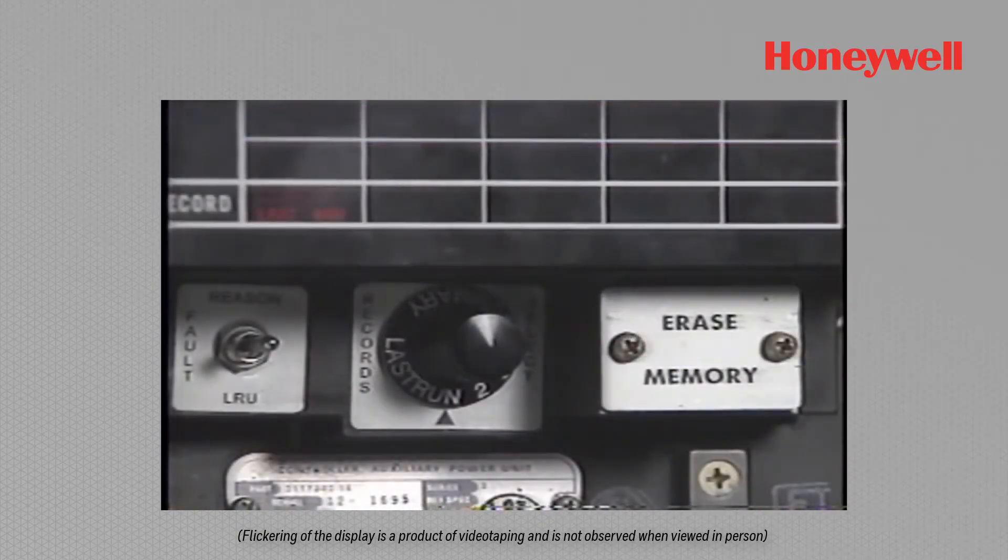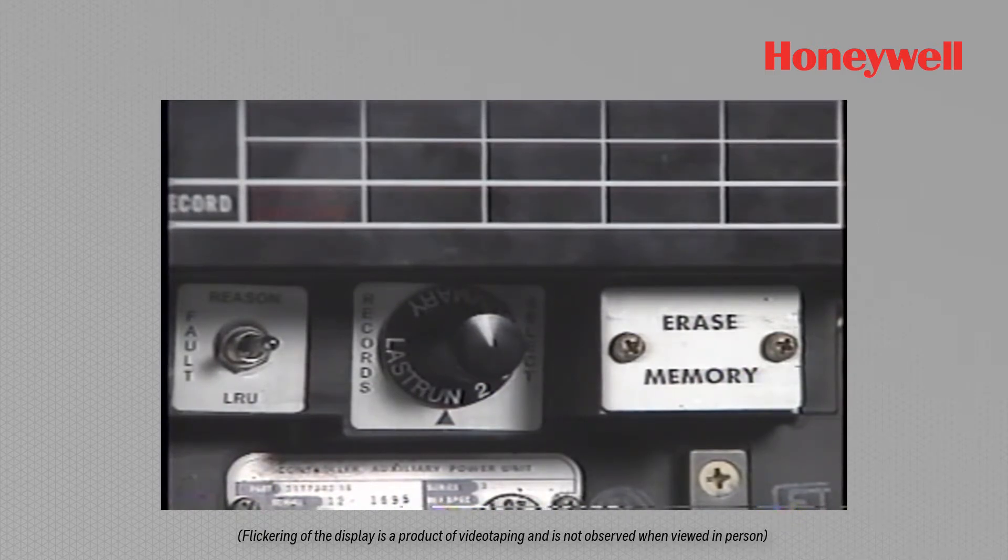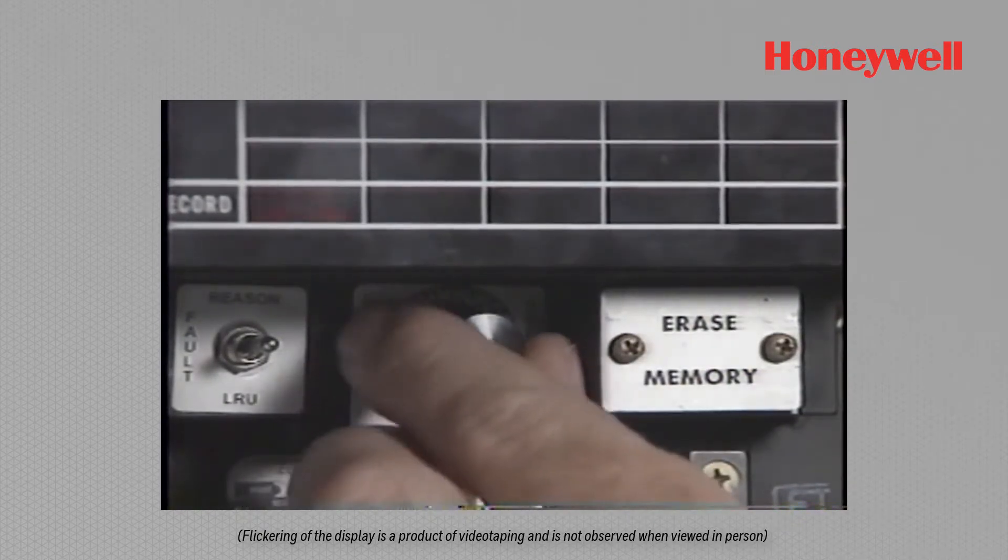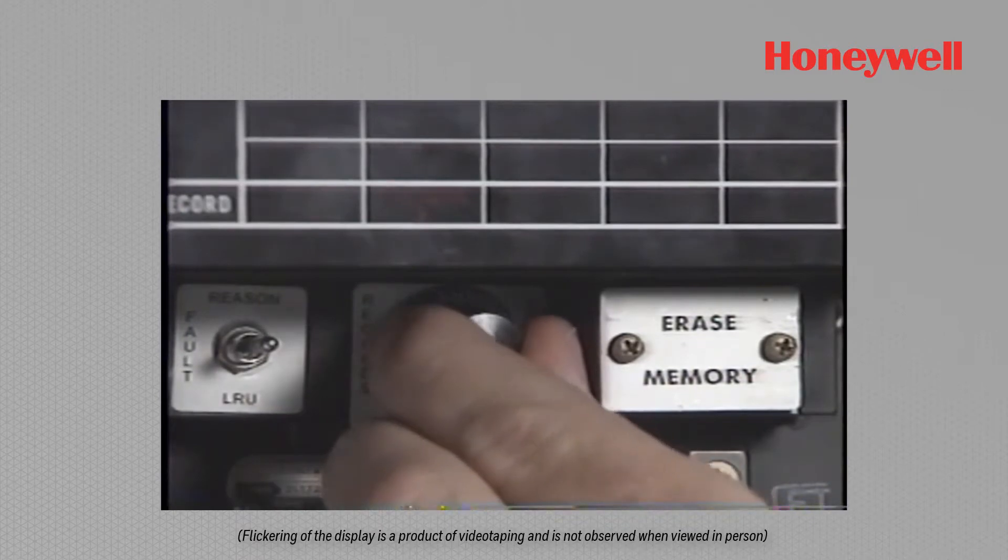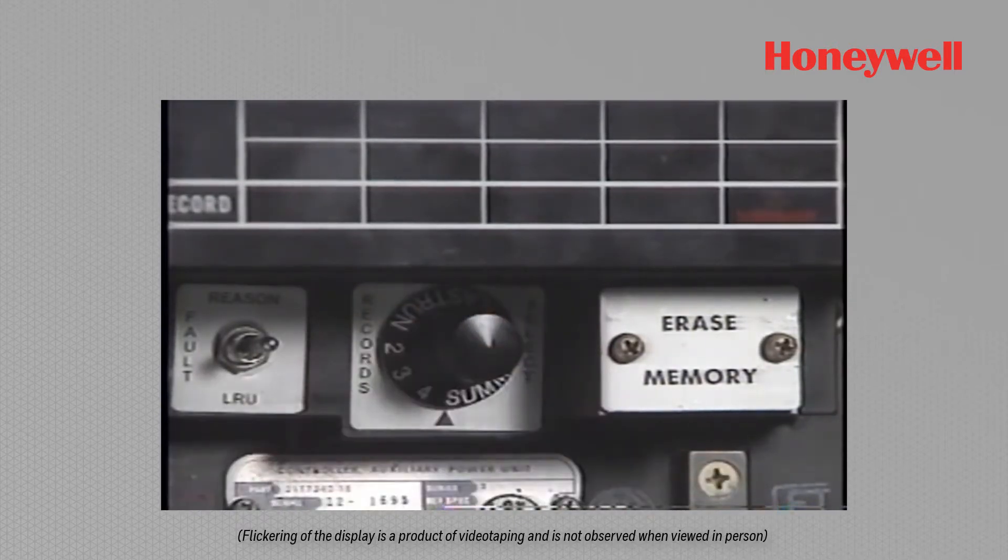The rotary record select switch selects which previous shutdown information is to be displayed. The last run position displays the most recent shutdown or normal stop. Switch positions two, three, and four display the second, third, and fourth previous shutdowns, while LRU summary displays all LRUs recorded since the last memory erase.